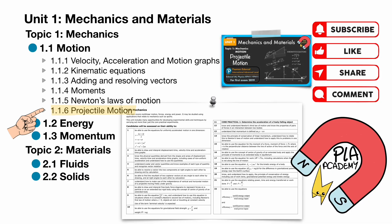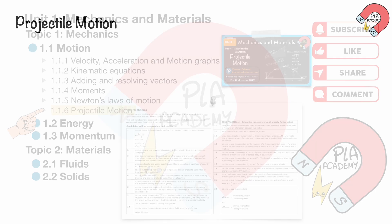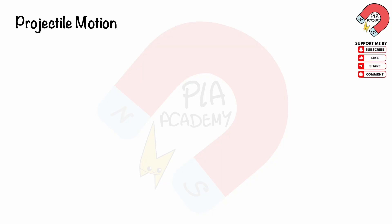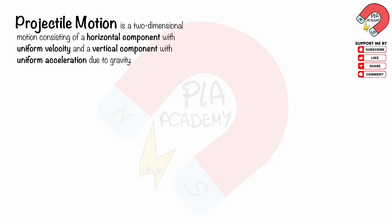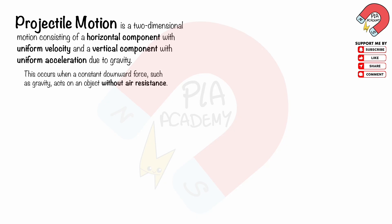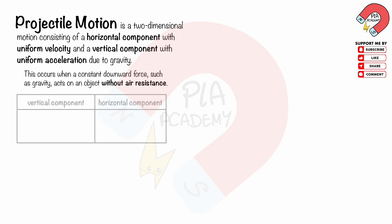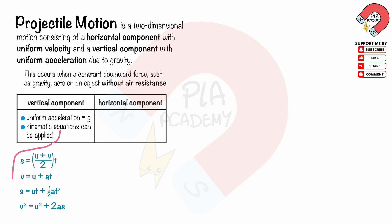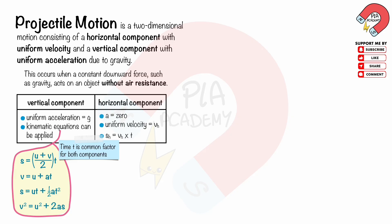Projectile motion is a two-dimensional motion consisting of a horizontal component with uniform velocity and a vertical component with uniform acceleration due to gravity. This occurs when a constant downward force such as gravity acts on an object without air resistance. The vertical component has uniform acceleration g, so we can use kinematic equations. The horizontal component has no acceleration, so velocity stays the same — we can only use one equation. The time t is the same for both components.